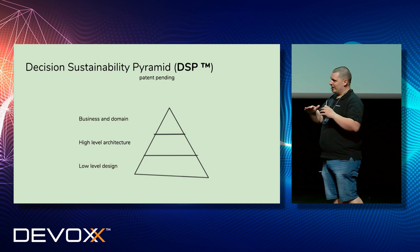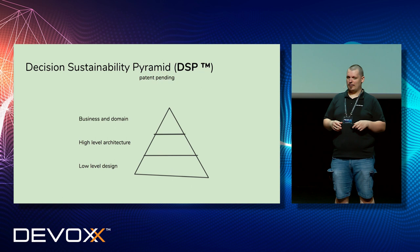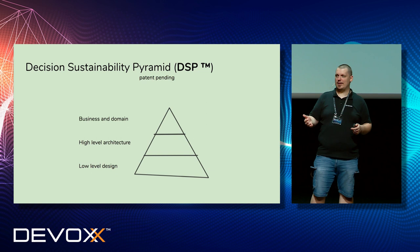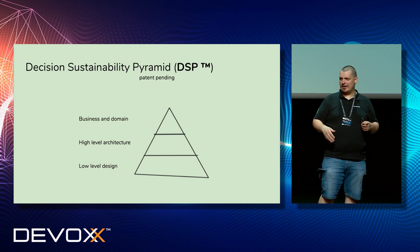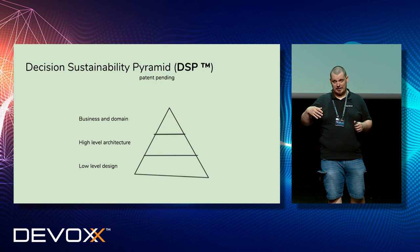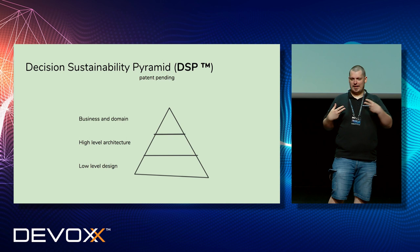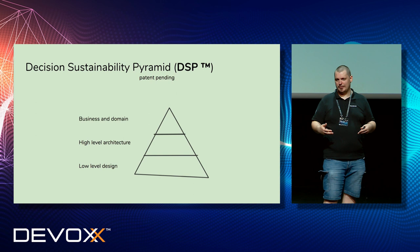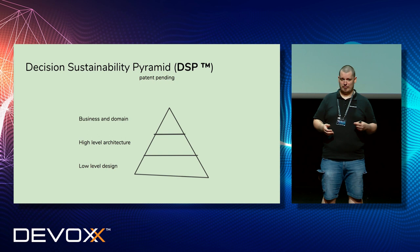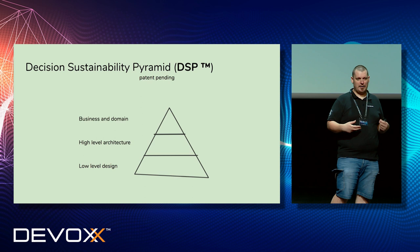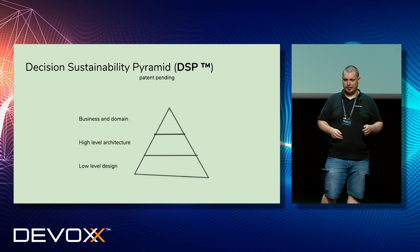What we mean by this is that there is a difference in the speed of changes across all of the areas we described. For example, your business and domain changes quite rarely — maybe with a new direction of the company, some new decisions, some pivot. High-level architecture may change regardless of business changes, but it's still not as fast as the code. You commit code to the repo every day, so changes in code are extremely fast compared to business and domain or high-level architecture. This means your approach to documentation has to be different, because you simply cannot apply the same principles when documenting domain as when documenting code.